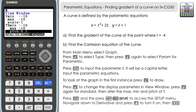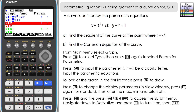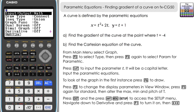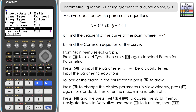There's one other thing we need to change. Press exit to go back to the input screen, then press Shift and the Menu button — Shift and Setup. Scroll down to derivative and press F1 to switch it on. That's going to be useful for answering part a.